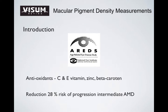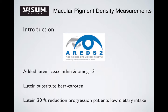A large randomized clinical study, the Age-Related Eye Disease Study (AREDS), showed that high doses of antioxidants — vitamin C and E, zinc, and beta-carotene — reduce by 28% the risk of progression from intermediate to severe AMD. More recently, the AREDS2 added lutein, zeaxanthin, and omega-3. Results showed that lutein may substitute beta-carotene, and in people with low dietary intake of lutein, the pigment may induce a reduction of 20% in AMD progression.